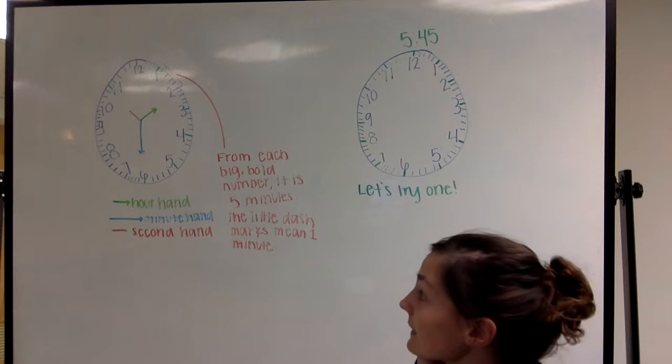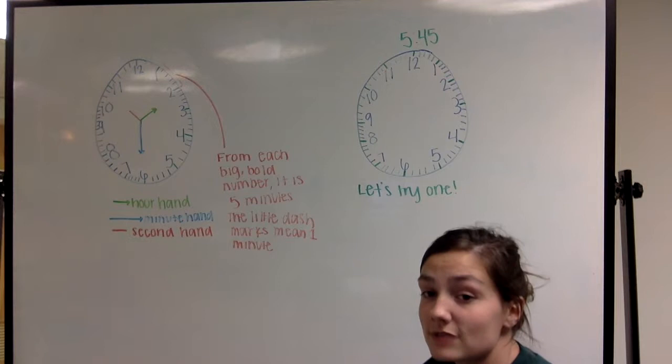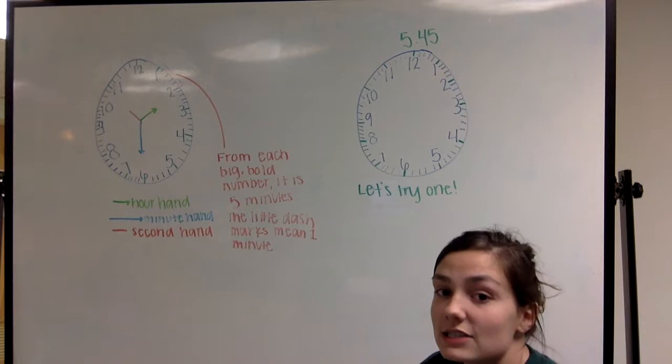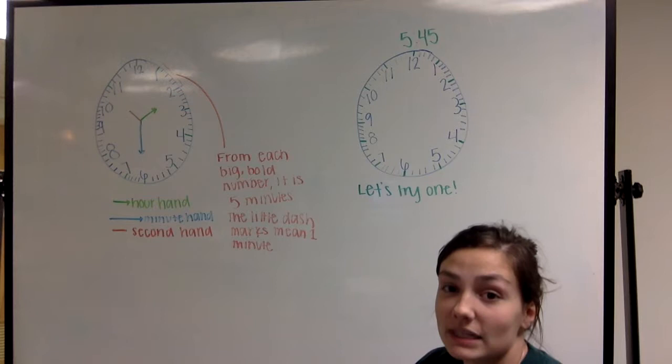The blue hand that's pointing down to the six is the minute hand. So for the minutes on this clock, it's a little different. One is five minutes, two is 10 minutes, three is 15 minutes, four is 20 minutes, five is 25 minutes, six is 30 minutes, seven is 35 minutes, eight is 40 minutes, nine is 45 minutes, 10 is 50 minutes, 11 is 55 minutes, and 12 starts the hour over. So it's zero, zero.